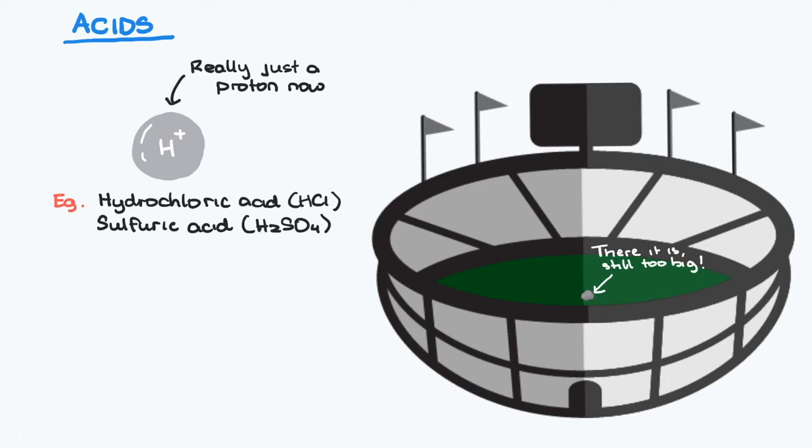Think of a pebble sitting in the middle of a sports stadium. This results in an extremely high charge density of the proton and strongly attracts it to any part of a nearby atom or molecule in which there is an excess of negative charge, for example water and its negatively charged polar region around the oxygen.